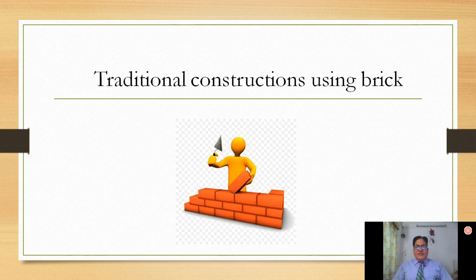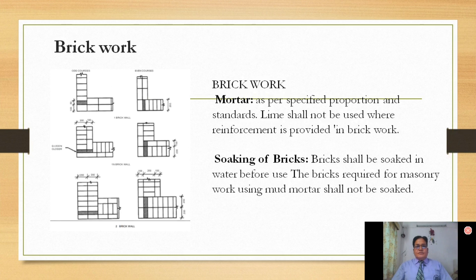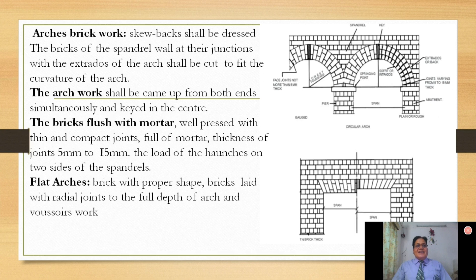Now let us go to the second part of this topic: brick construction. You will see there are various types of brick bonds used in olden times as well. The basic materials being used are mud, soil, lime, and mortar as bonding materials. Soaking of bricks is the first step after selecting a very good type of brick. It should be soaked and checked for how much water it absorbs depending on the strength. When using brick work in arches, we have to do certain supporting work to construct the arches.